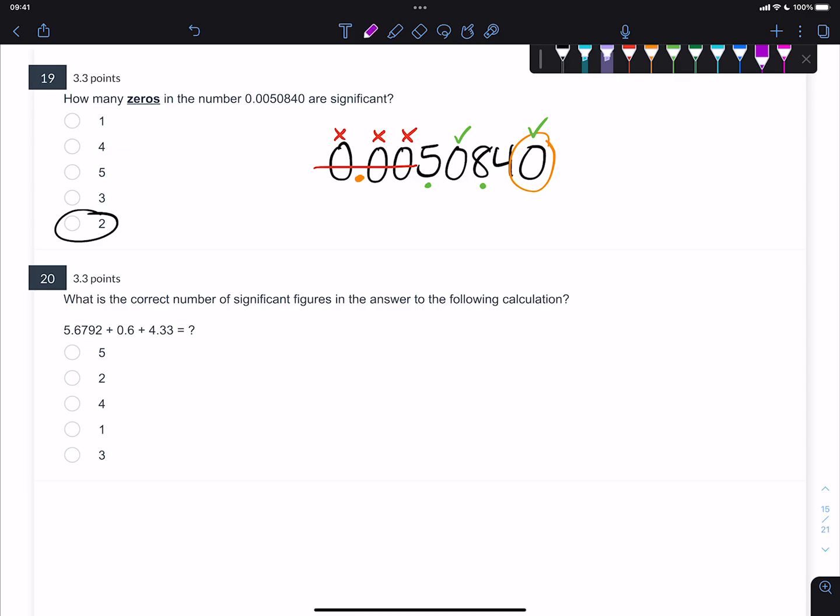But here's another example. Suppose you have this number, and you're asked how many significant zeros there are. There is no decimal point shown, so these interior zeros are significant, and obviously the non-zeros are significant, but these trailing zeros are not significant because there's no decimal point.